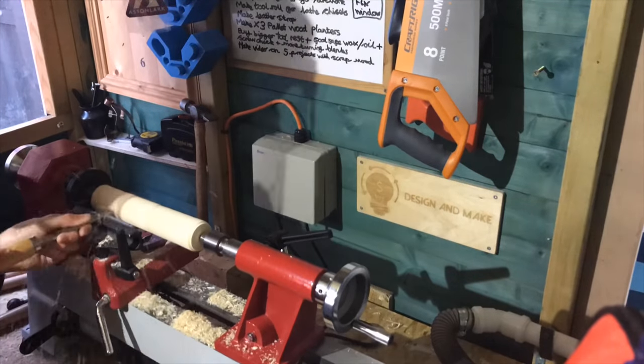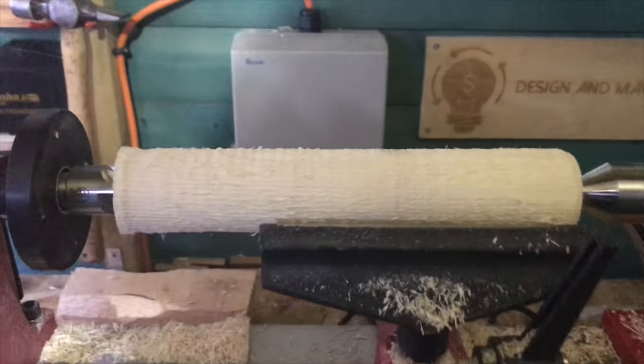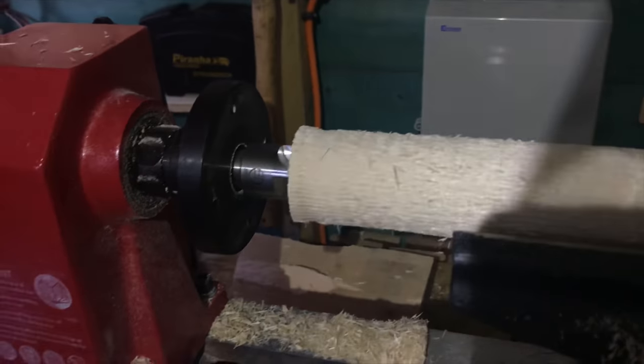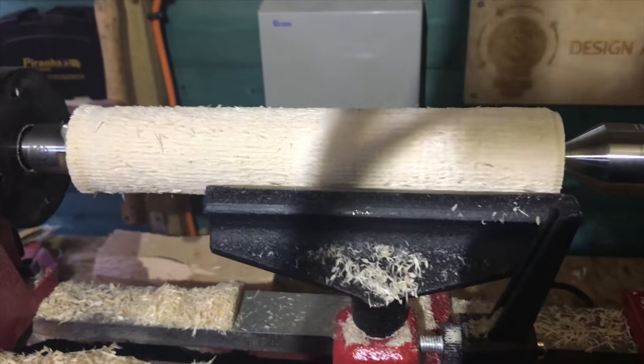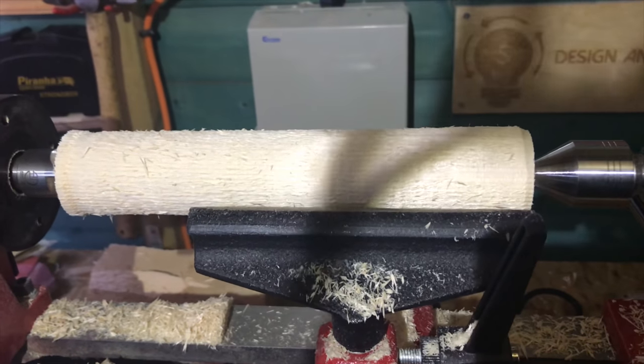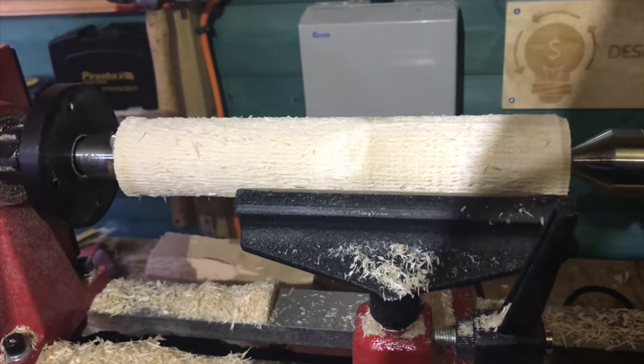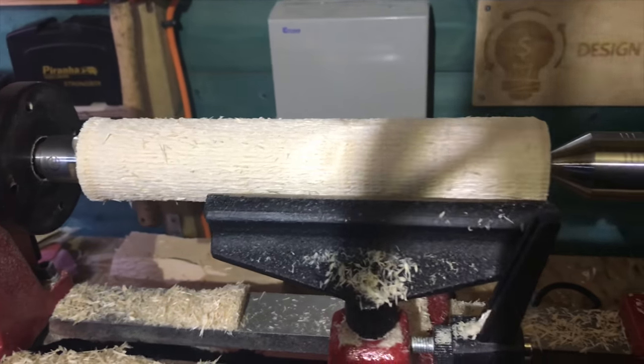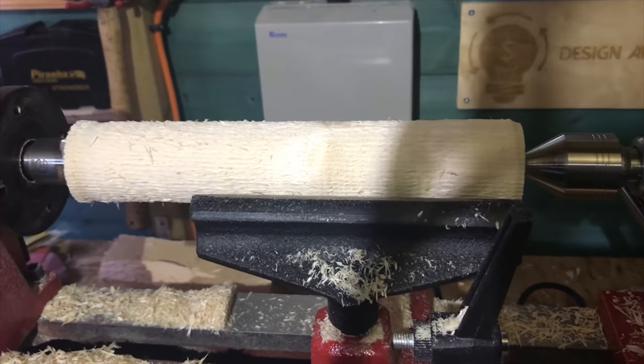Let's get started. Okay, so we've turned the square stock down to a round spindle. This piece of pine is going to become a spinning top, so we need to basically make a spinning top shape. I'm going to use the parting tool and a pencil to mark out my shape.